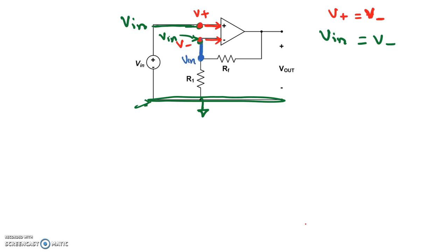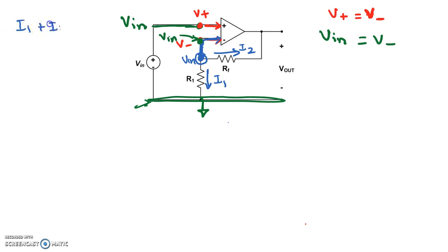Now let's start out by drawing arbitrary directions of current — I'll call this I1 and this I2. Let's do Kirchhoff's current law right at that node. The total amount of current coming in must equal the total amount going out. There's no real current going into that node because I1 and I2 are both going out. The current going into the negative terminal is zero for an ideal op-amp, so I1 plus I2 equals zero.